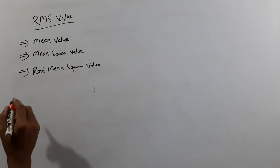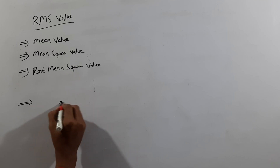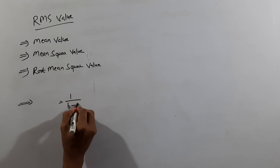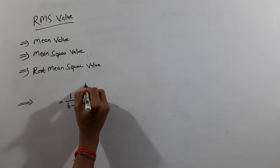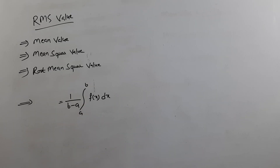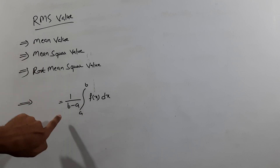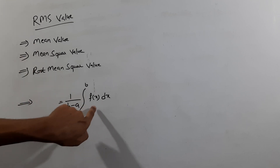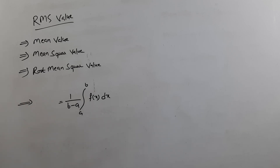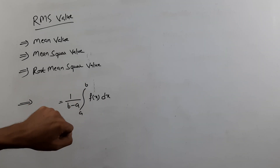The mean value formula is the same as the integration formula. Mean value formula is 1 by (b minus a), integration of a to b, f of x into dx. Here, a to b is the range — a is the lower limit and b is the upper limit.